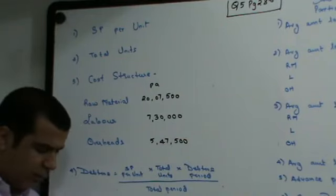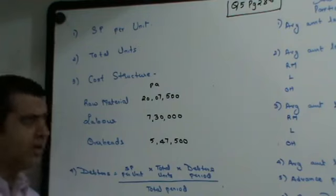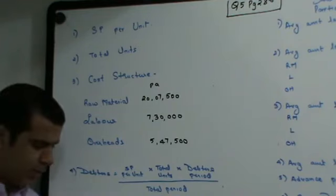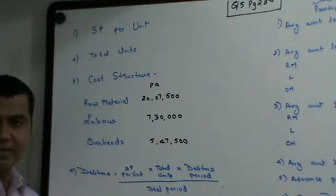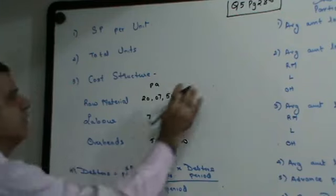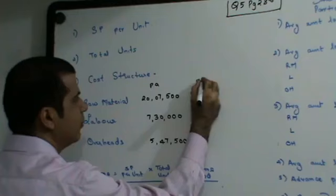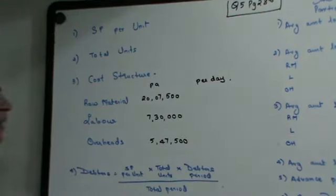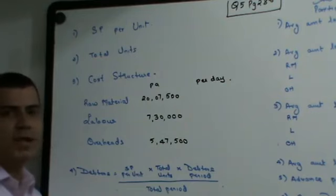Now, if you read the adjustments, all the adjustments are given to you in terms of per day. They have given you adjustments in terms of days. So what you have to do is, you have to convert this data into per day. How do I convert this data into per day? To convert it into per day, you have to divide by 365.